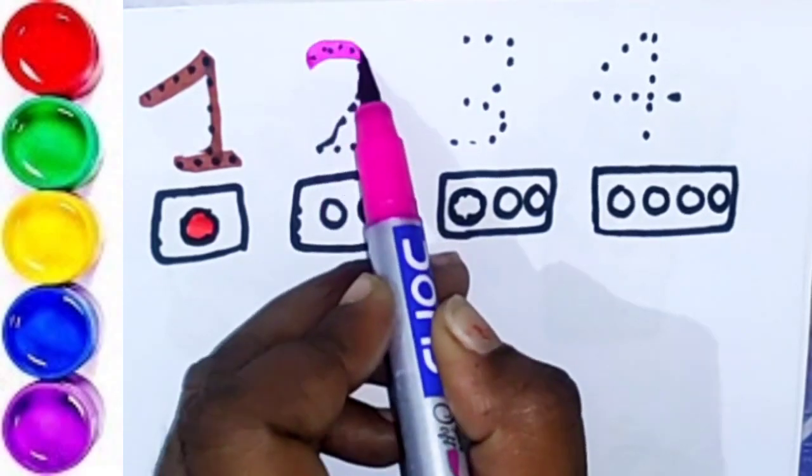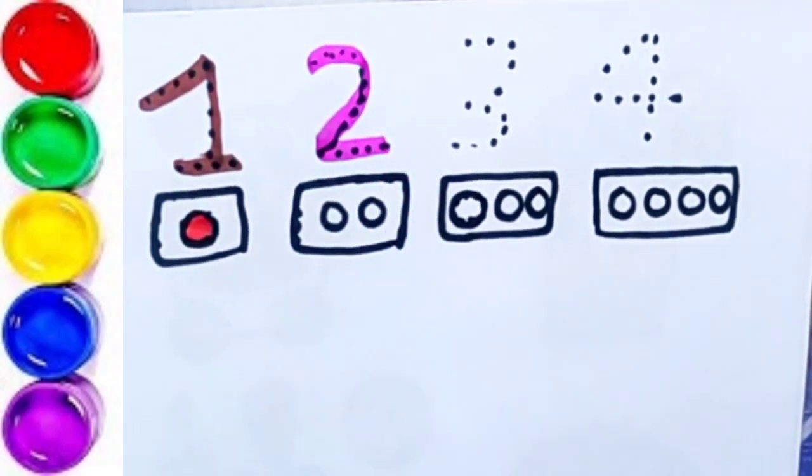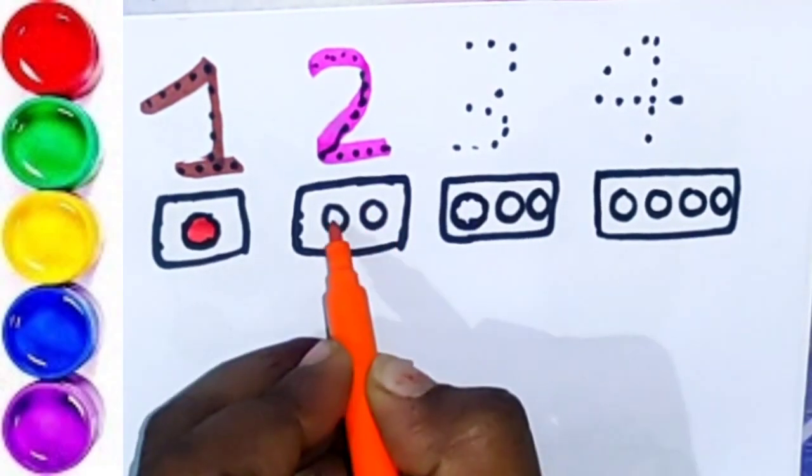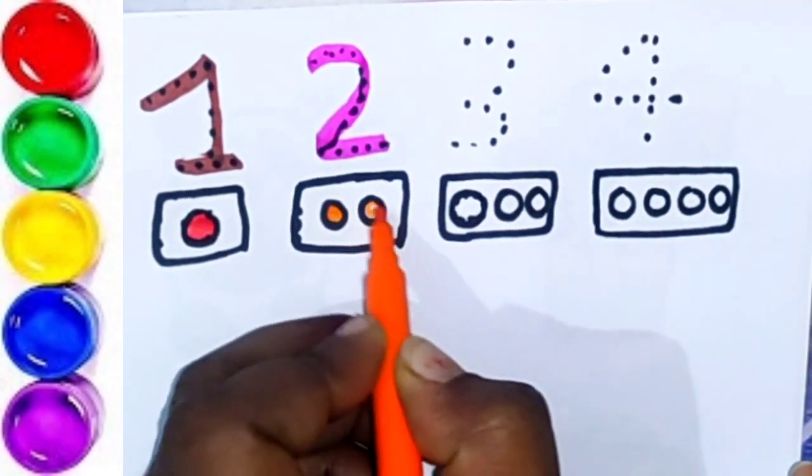Purple color, two. Orange color, two circle.